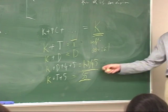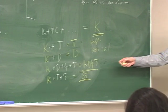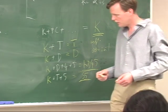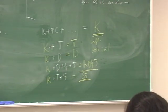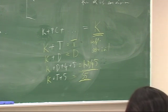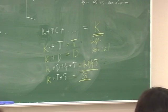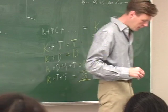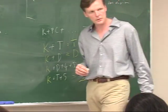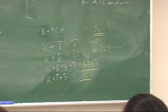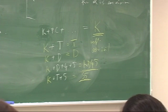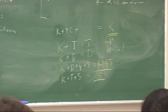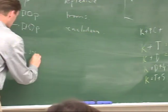These two — KD45 and S5 — are the ones you see most often in the literature on linguistic applications of modality. S5 characterizes frames that are reflexive, transitive, and Euclidean — or alternatively, reflexive, symmetric, and transitive.